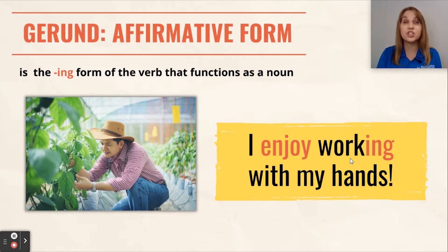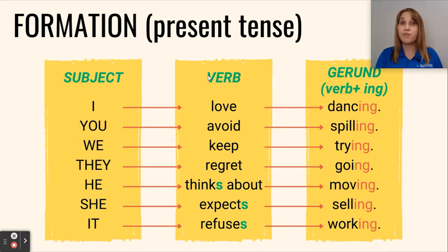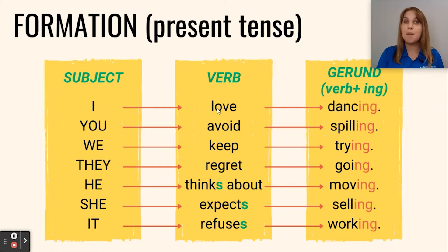The formation of a gerund in the present tense consists of two verbs. The first verb is used in its basic form, and the next verb is used with the ending -ing. So we have verb plus -ing — for example, 'love dancing.'